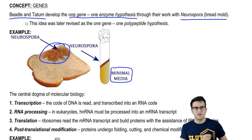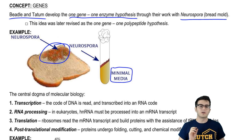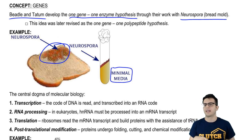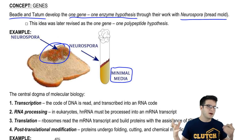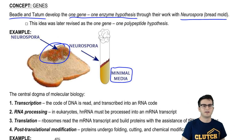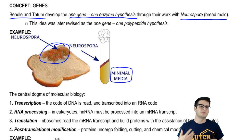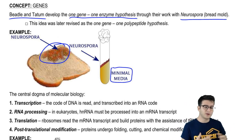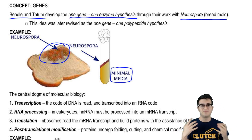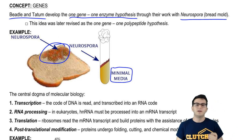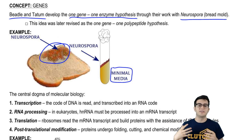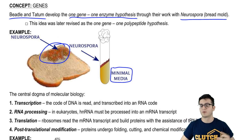What they found was that some of these mutants, which couldn't survive in the minimal media, once given the proper amino acids — or amino acid, whatever they needed — were capable of surviving. They came up with the idea that the mutations these Neurospora incurred somehow affected their ability to produce those amino acids for themselves. A normal Neurospora is capable of making any amino acid it needs, but these various mutants lost the ability to produce one or more of those amino acids.